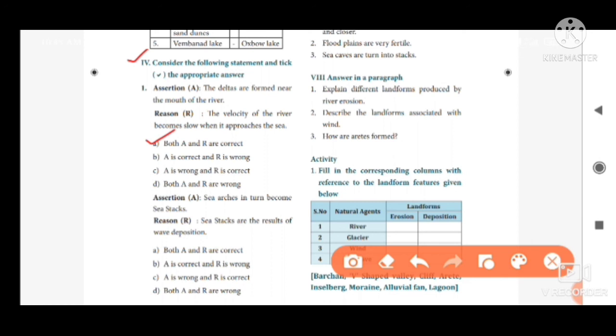Option B, A is correct and R is wrong. Option C, A is wrong and R is correct. Option D, both A and R are wrong. The correct answer is option B, A is correct and R is wrong.